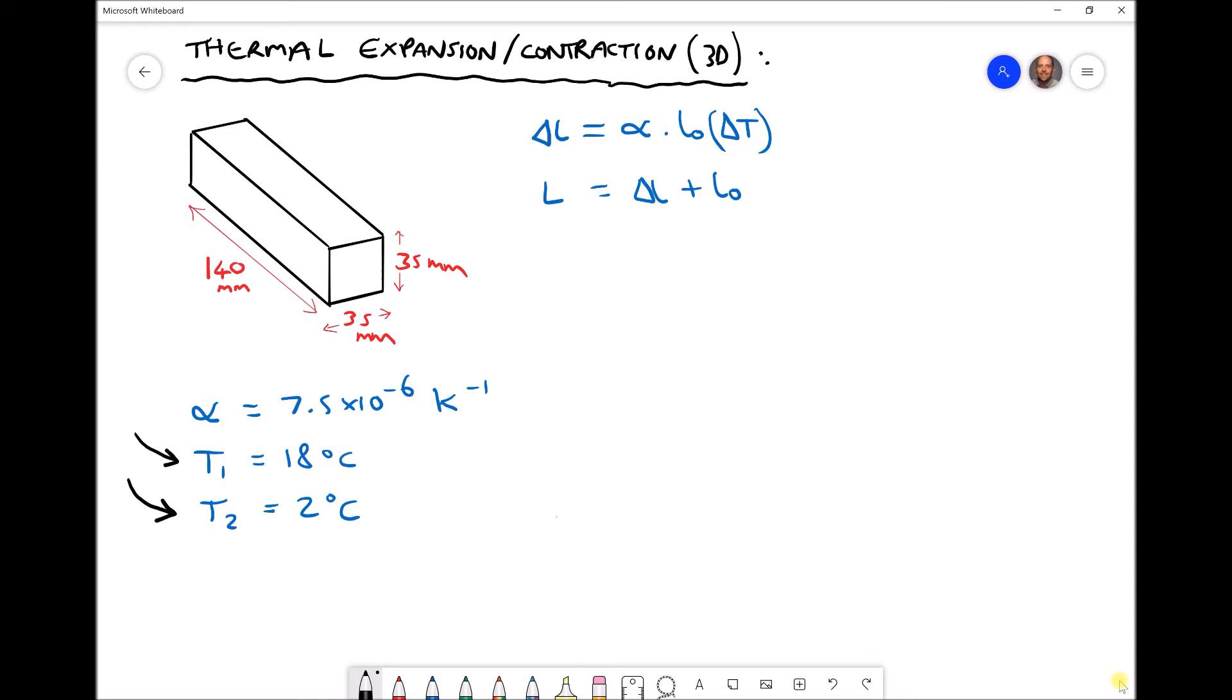So let's begin then by calculating our change in length in each of our directions. So for our change in length in the x direction we have our thermal expansion coefficient of 7.5 times 10 to the minus 6, we have our original length of 140, and we have our change in temperature. Take care here: T2 minus T1, 2 minus 18. That's going to give us a change in temperature of minus 16 because we're cooling the object.